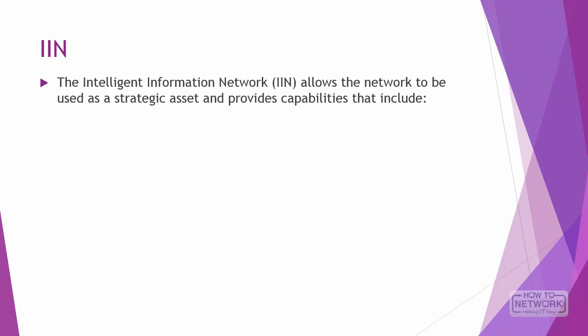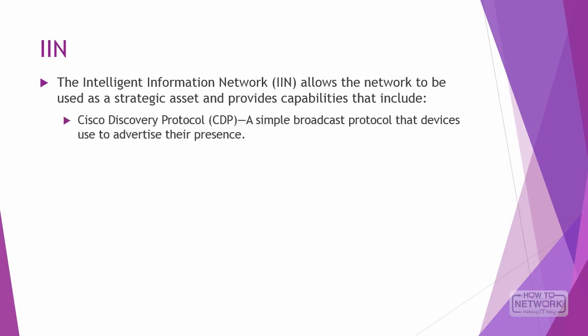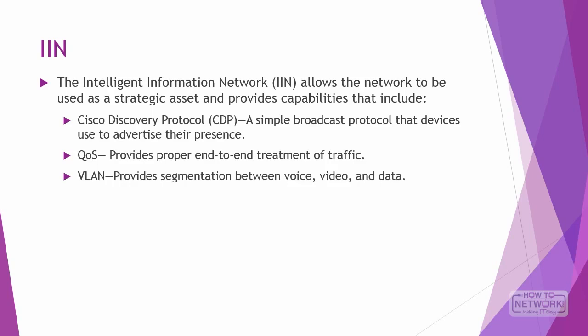IIN allows the network to be used as a strategic asset and provides capabilities including CDP, which is a simple broadcast protocol that network devices use to advertise their presence. It operates in the background and facilitates communication between, for example, a Cisco Unified IP Phone plugged into a network and the network switch itself. QoS: Cisco provides an end-to-end QoS solution to ensure that packets are serviced appropriately as traffic flows through the access layer, with priority queuing and buffer management ensuring real-time traffic is prioritized. VLANs allow the LAN infrastructure to distinguish between a phone and a PC using VLAN tagging.